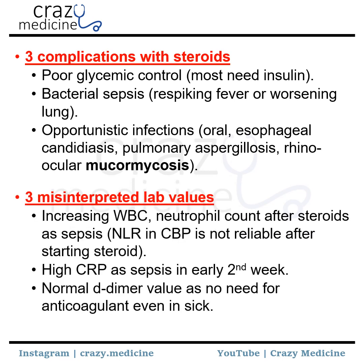Then, three misinterpreted lab values. First, increasing WBC and neutrophil count after initiation of steroids — neutrophil-to-lymphocyte ratio is not reliable after starting steroids, because steroids itself changes the immune response. Then high CRP interpreted as sepsis in the early second week — do not consider increased CRP as sepsis in the second week. Third, normal D-dimer value interpreted as no need for anticoagulant even in sick patients — even if D-dimer is normal, you have to give anticoagulation, because COVID itself is a hypercoagulable state. Anticoagulation is a must for each and every patient in moderate to severe disease.